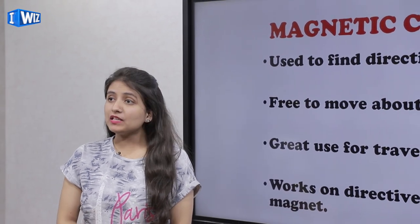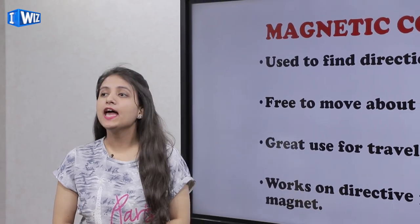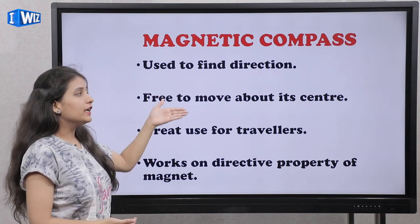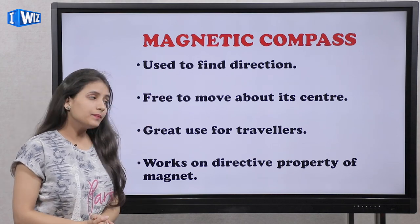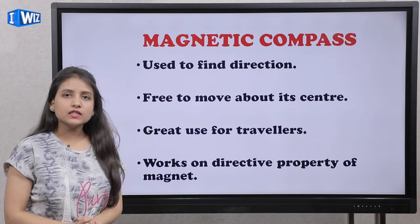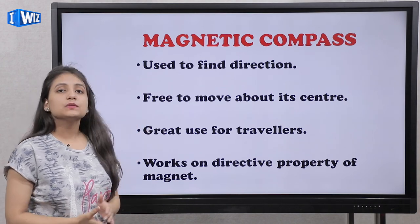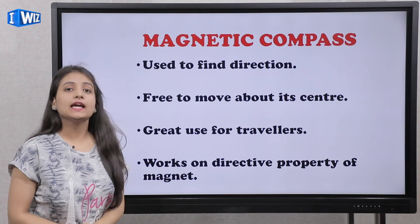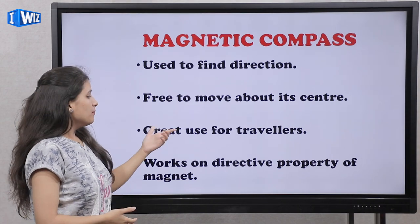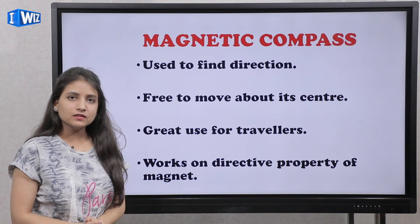The magnetic compass is used to find direction. It is free to move about its center. It works on the directive property of the magnet.